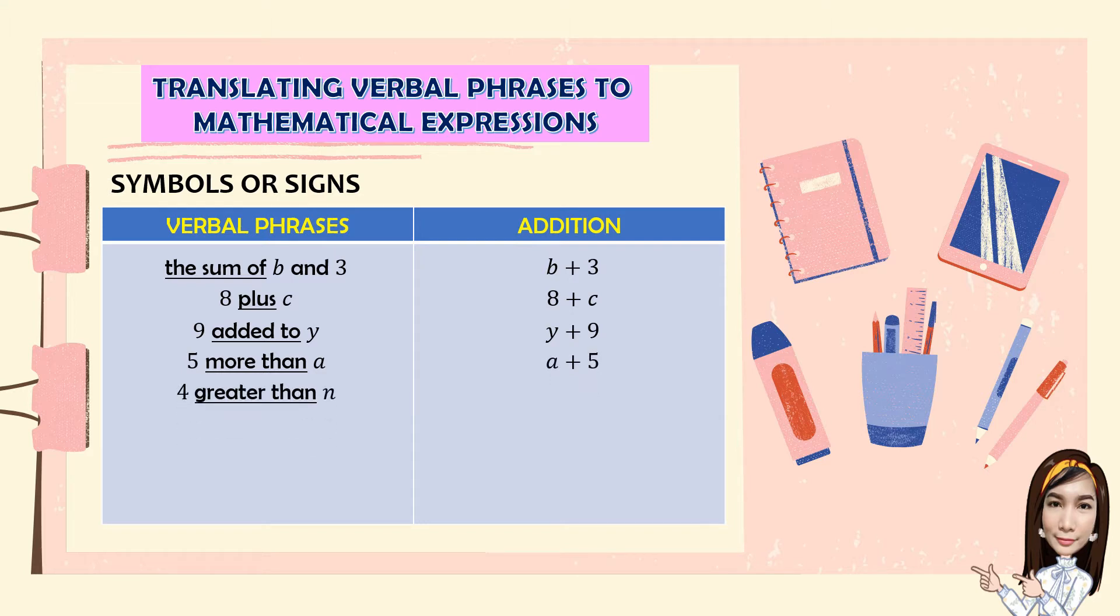4 greater than N, that is N plus 4. M increased by 6, M plus 6. P exceeds by 18, P plus 18.